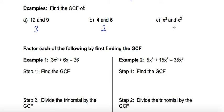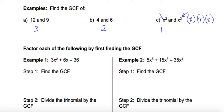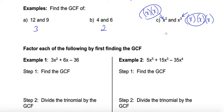What is the greatest common factor that will divide evenly into x squared and x cubed? You might think it's just 1, because there's an imaginary 1 in front of each term. But when dealing with variables, we have to think about our exponent laws. X to the power of 3 can be written as x times x times x, and x squared as x times x. So x squared has two x's and x cubed has three x's. The greatest common factor is actually x times x, or x squared, because x squared divides evenly into x to the power of 3.